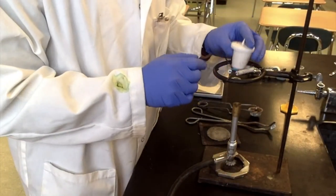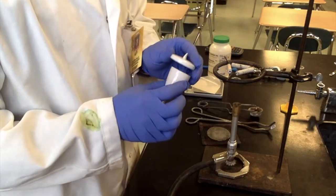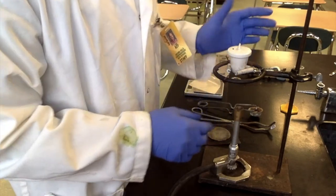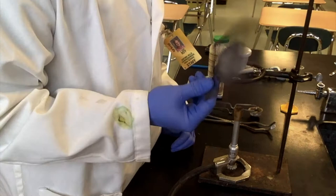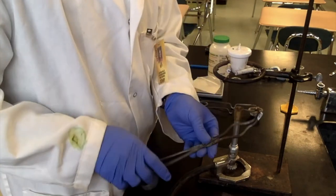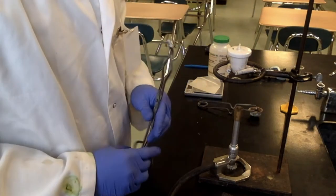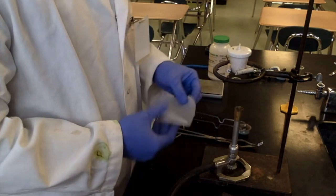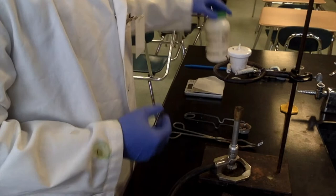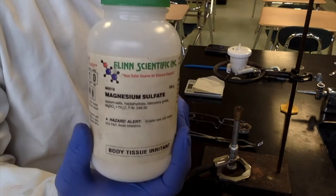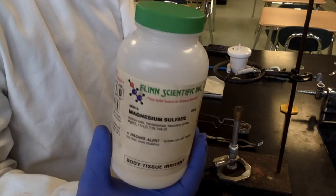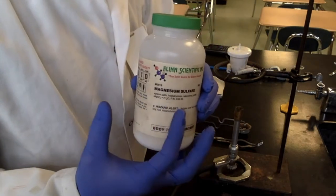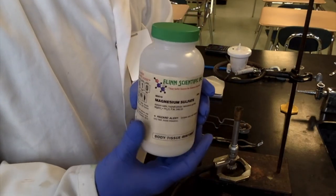All right, so we have a crucible and cover. We're going to clean that in just a second. We have a Bunsen burner, ring stand, clay triangle. To cool it we have our wire mesh. We have crucible tongs specifically for moving the crucible around safely. Sparker, balance with a piece of weighing paper, and the magnesium sulfate which is the hydrated compound that we'll be measuring the amount of water in. You could cheat by just reading the label, but we'll see how close we get to the actual amount.